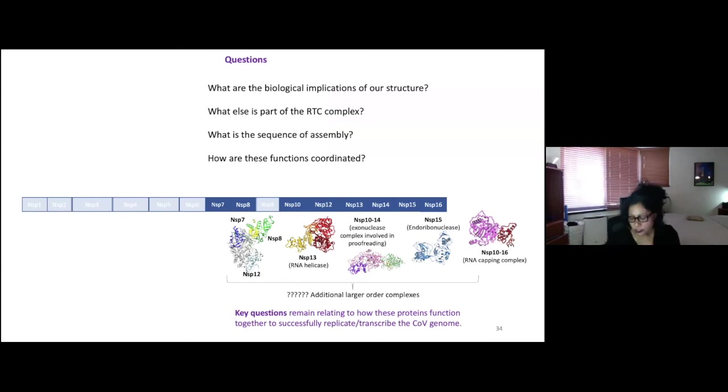So going forward, where are we going now? So what are the biological implications of the structure? And Seth is going to answer a lot of that next. He's going to talk about these in the context of replication and transcription. Who else is part of this complex? And what is the sequence of assembly? How are they coordinated? So there are lots and lots of questions. And we keep coming up with more and more.